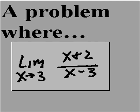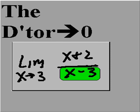The limit as x approaches 3 of x plus 2 over x minus 3 is a problem where the denominator approaches zero.